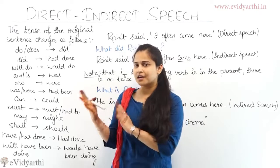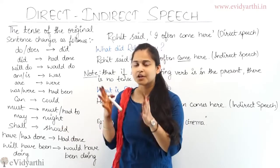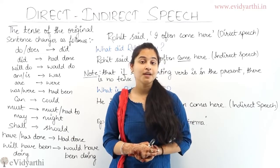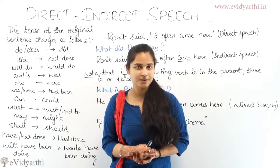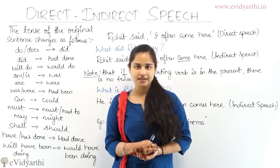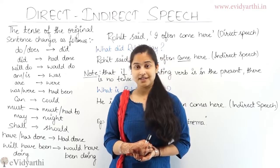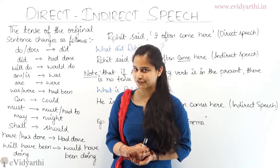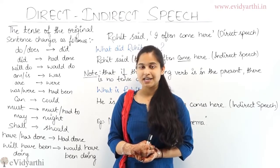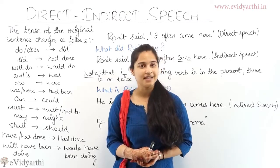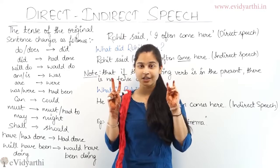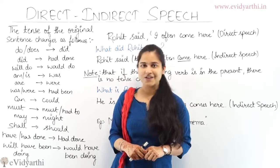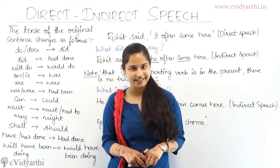Thodi der baad, Raman ne Rohit se poocha ki, 'Tu ne Rakhi ko kya bola?' Rohit ne kaha, 'I told Rakhi that she was looking beautiful.' So yahan par do sentences formulate hui hain — direct aur indirect.